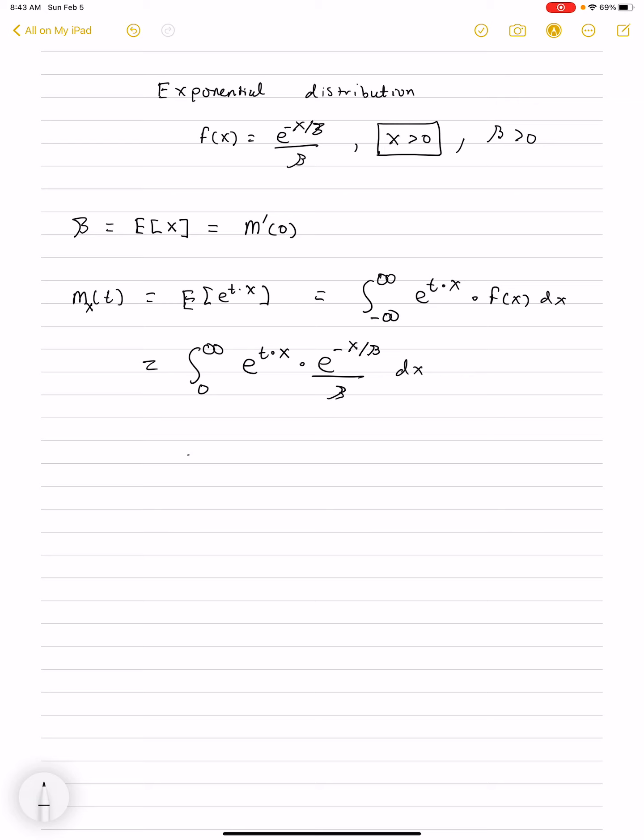That parameter beta describes the exponential distribution in that it represents the mean, and it's a number that needs to be given. So somewhere the parameter beta or the mean needs to be given in the problem.